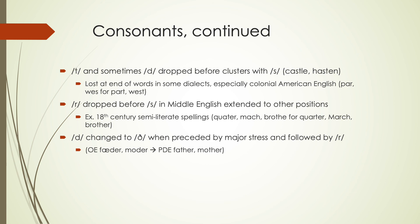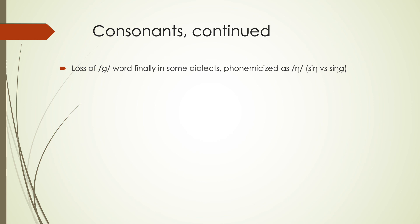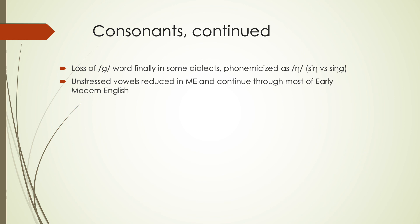D changed to a TH sound when preceded by major stress and followed by R — this is where we get the TH sound in 'father' and 'mother,' going from 'foder' and 'moder' which still had a D in Old English, switching to TH by the end of the Early Modern period. We also lost G word-finally in many dialects — most American dialects don't pronounce it at the end of words even though it's spelled. This created a phonemic NG sound where 'sing' versus 'sing-g' — the difference between N and NG sounds can create a phonemic environment.